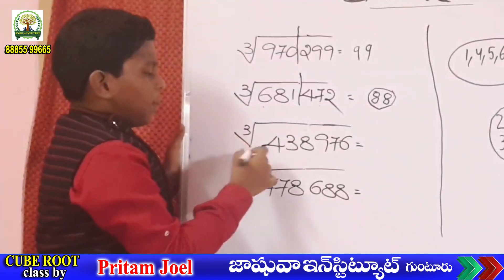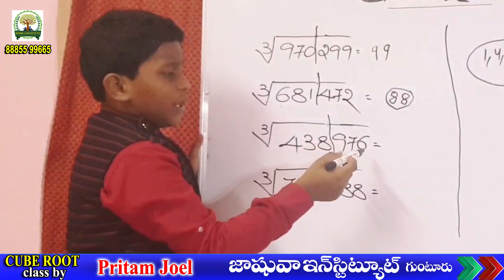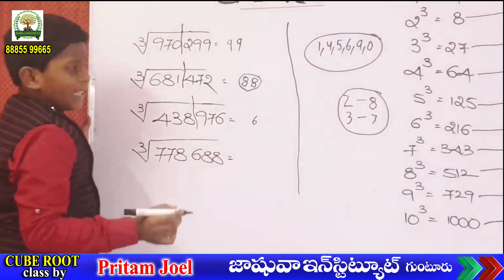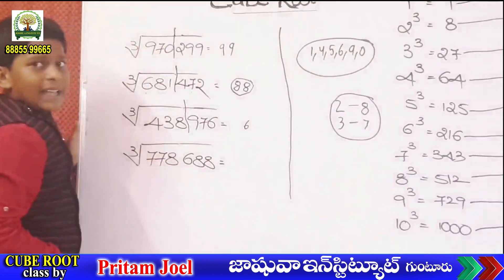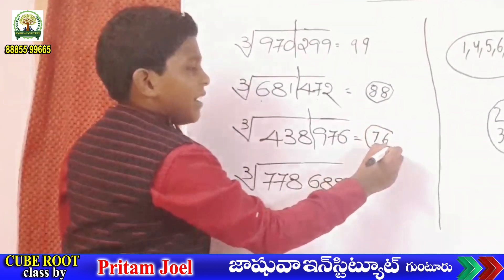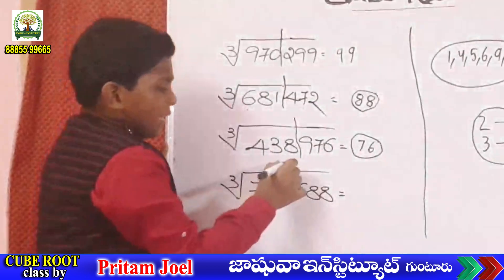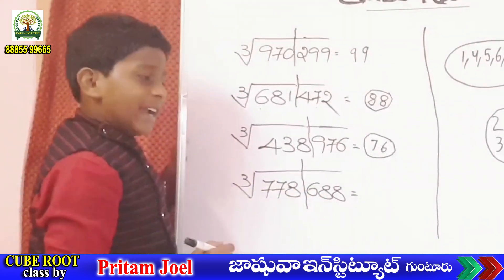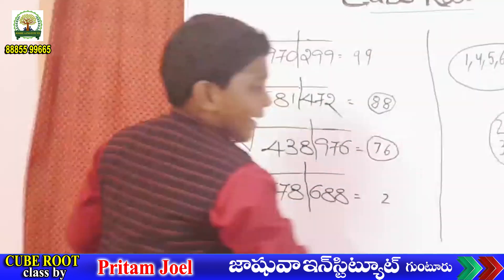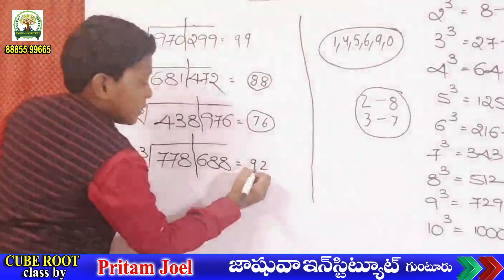Next, cube root of 438976: remove last 3 digits. The unit place is 6, so the answer unit place is also 6. Remaining 438 is bigger than 343, means 7 cube. Cube root cancels, so 7. This answer is 76. Next, cube root of 778688: remove last 3 digits. The unit place is 8, so the answer unit place is 2. Remaining 778 is bigger than 729, means 9 cube. Cube root cancels, so 9. This answer is 92.